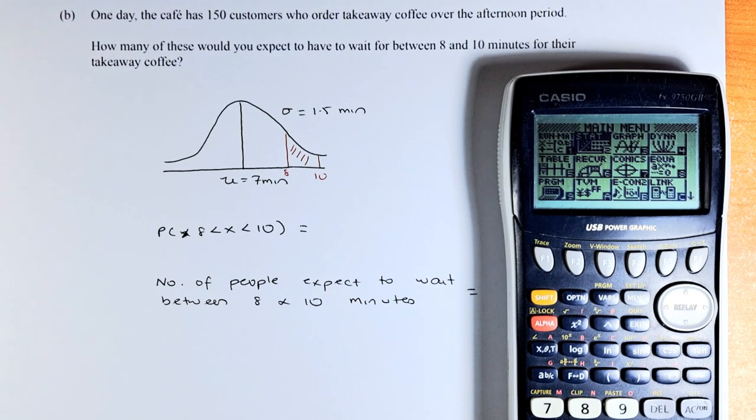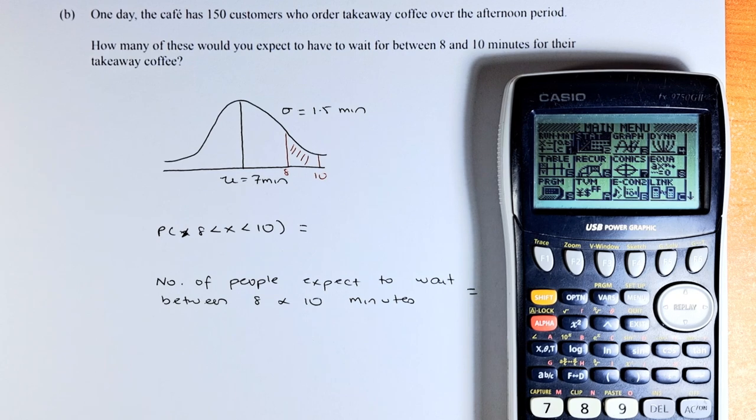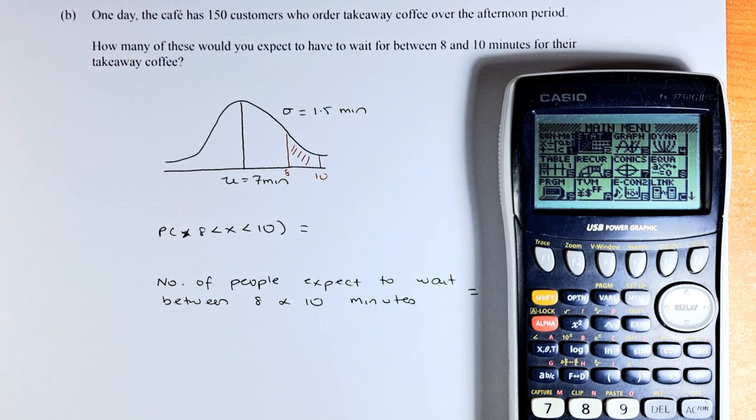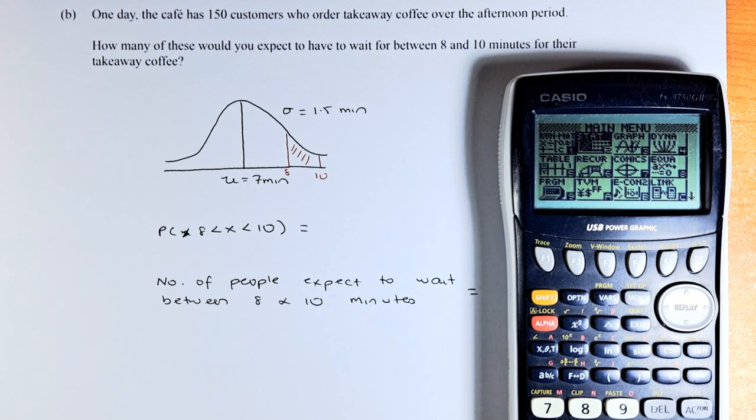Good day! In this video, we are looking at question 3B of the 2021 NCA Level 2 Probability Methods question. This is a question after 1A, so we are going to transfer some of the information from 1A into this question. Part B says: One day, the cafe has 150 customers who order takeaway coffee over an afternoon period. How many of these would you expect to wait between 8 to 10 minutes for their takeaway coffee?